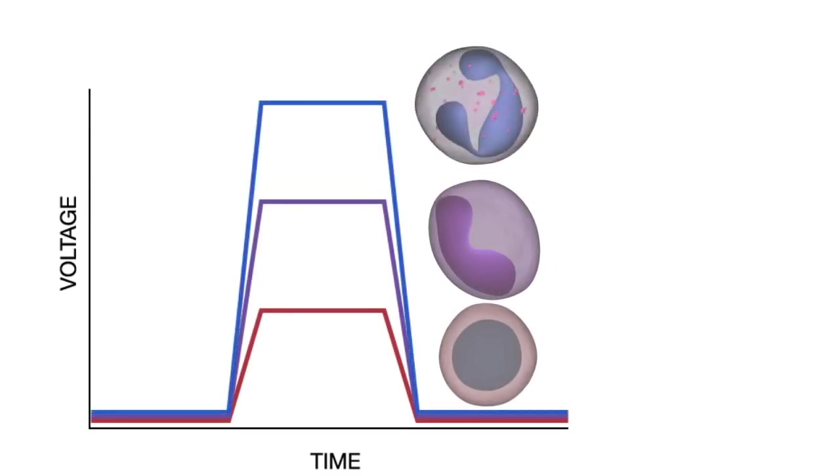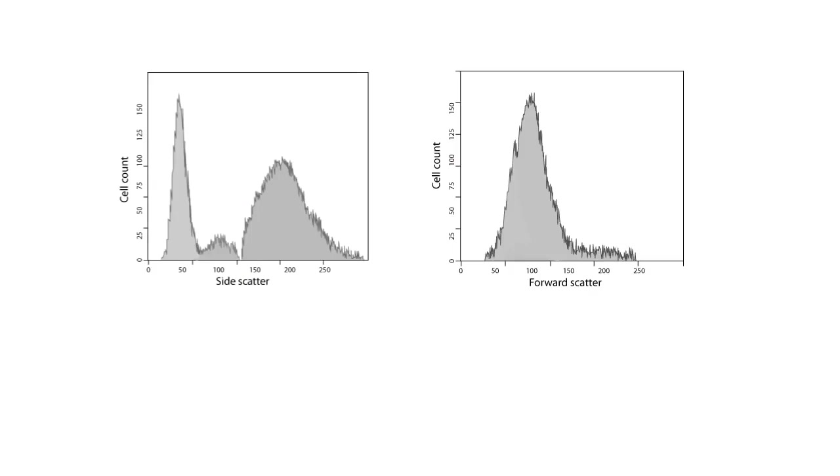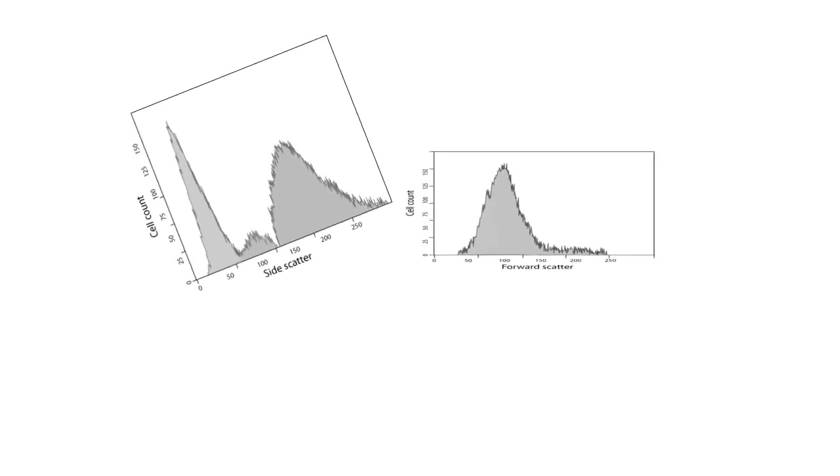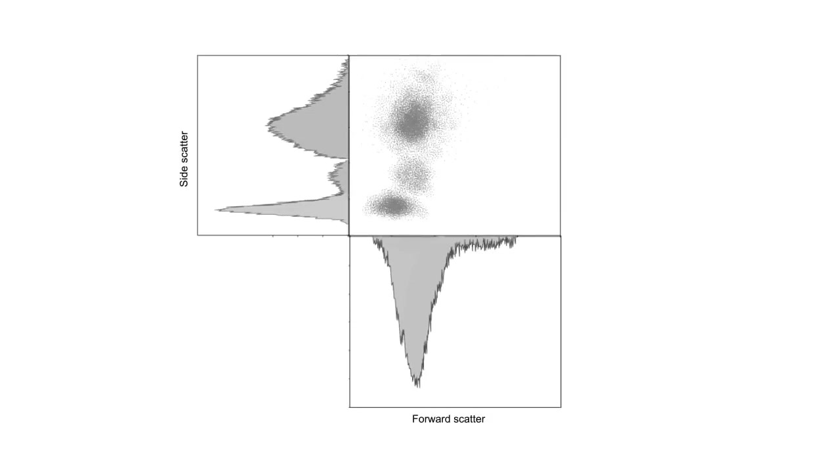The voltage pulse is directly proportional to the amount of side scattered light. By analyzing the forward and side scattered data together, the researcher can understand a cell's size, shape, and complexity.